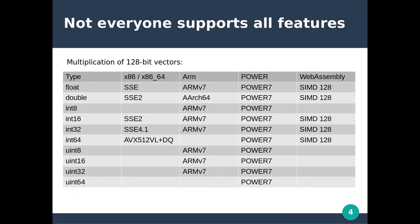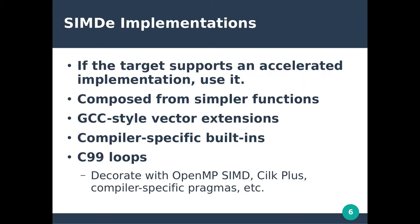Unfortunately, there isn't always a one-to-one mapping of functions. Sometimes an operation supported by one CPU isn't supported by another. Other times the operation is supported, but not for the specific types in question. If the target supports an equivalent function, we can use that and there's no performance penalty. Other times we have to compose functions by stringing together multiple simpler operations or make use of compiler-specific functionality.